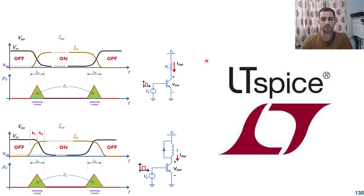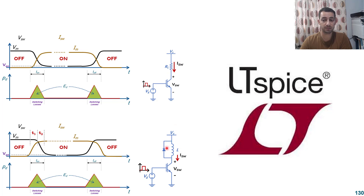This is a continuation of the Power Electronics Notes lectures. In the previous video we discussed the switching losses for inductive and resistive loads. Today we are going to show how we use LTSpice to give us validation of the differences between driving a resistive load and an inductive load, and how we get the power losses using the software.